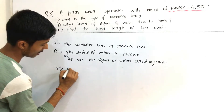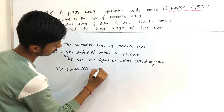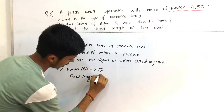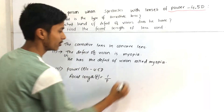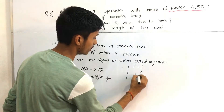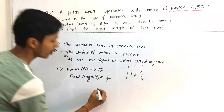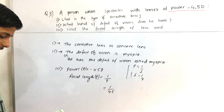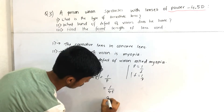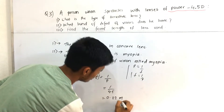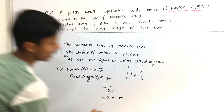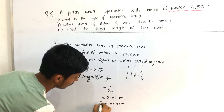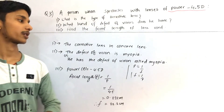For part three: we are given power P = −4.5 diopter. To find focal length, we use f = 1/P. Substituting, f = 1/4.5 = 0.22 meter. When we convert this focal length to centimeters, we get 22.2 centimeter. This is the focal length of the lens used in the spectacles. This completes question number 3.